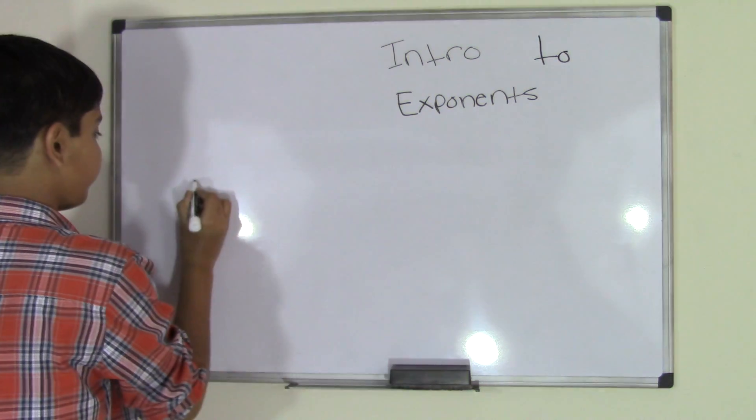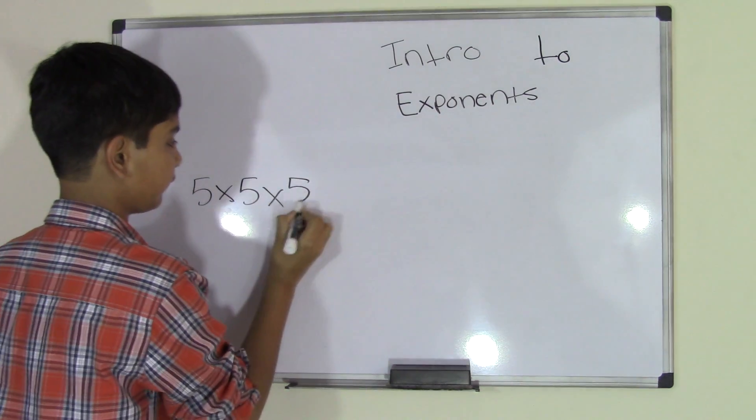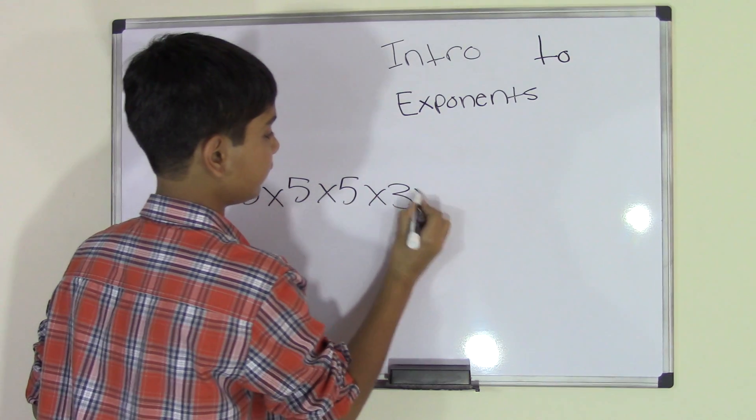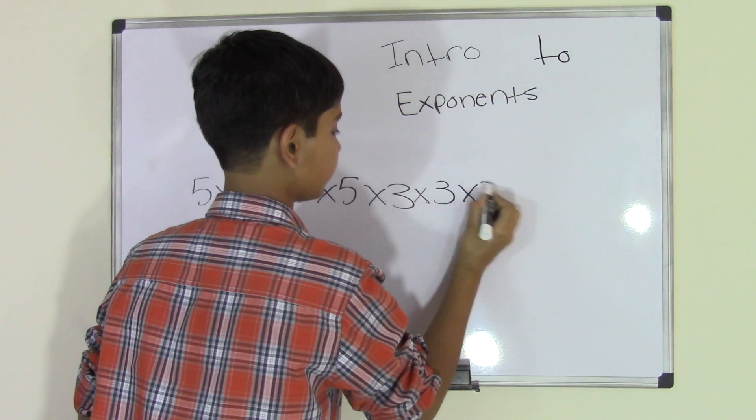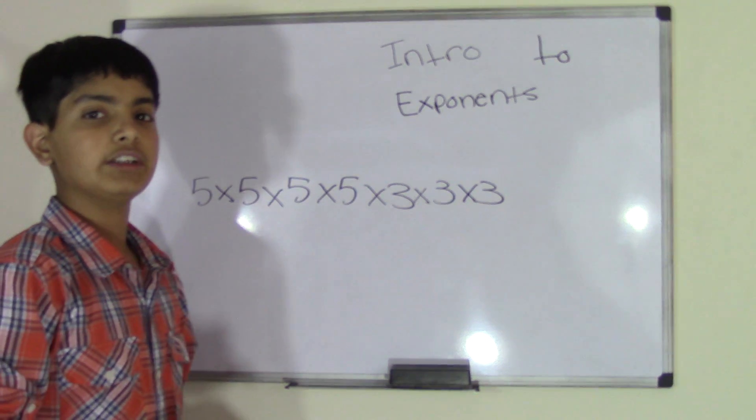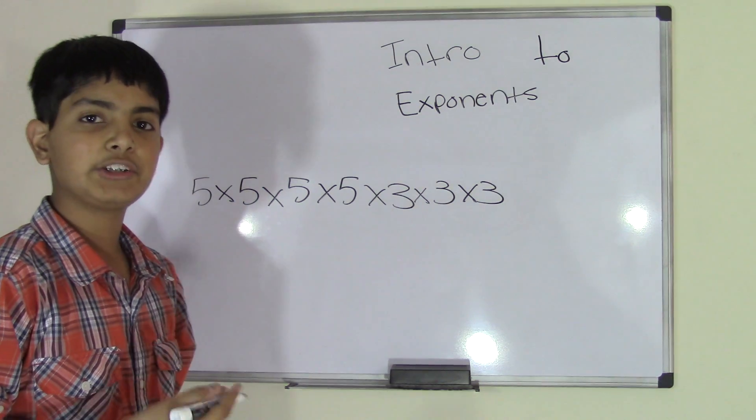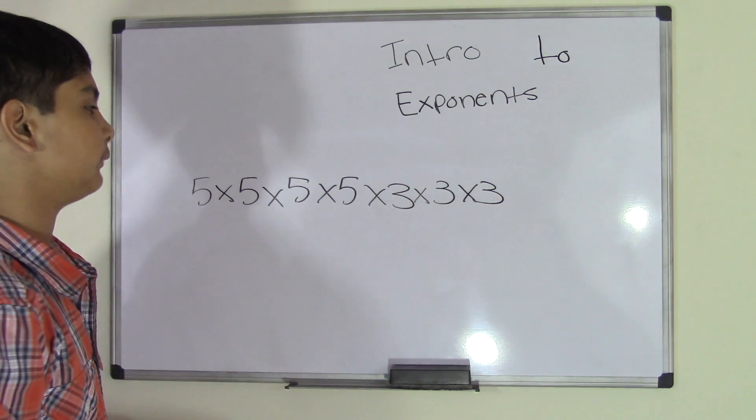For example, 5 times 5 times 5 times 3 times 3 times 3. That's long, isn't it? And then you get confused and it's so lengthy that you have to read it over and over again. But guess what? You can make it shorter. How can you make it shorter? By using exponents.